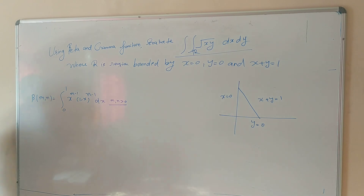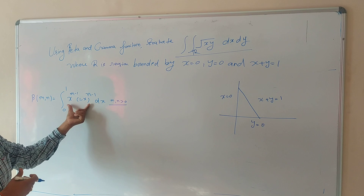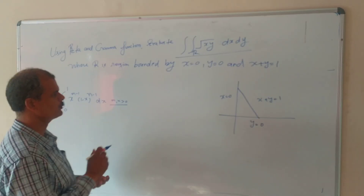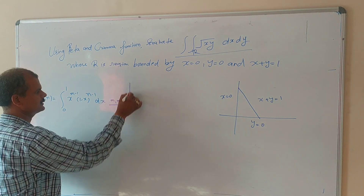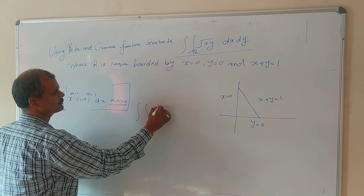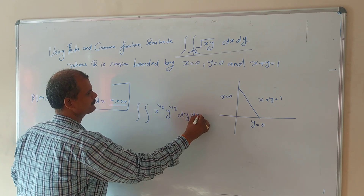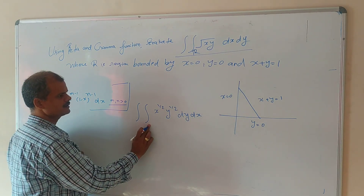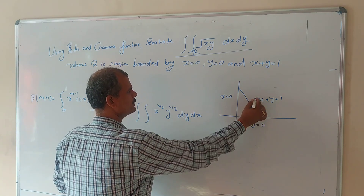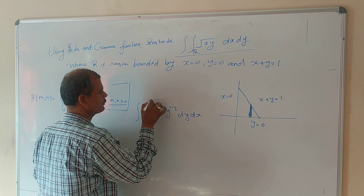So, if you want to change to beta and gamma function form, we need to get the form x(1−x). Over this region, y can be replaced by 1 minus x, so we get this form. We have the double integration of x^(1/2) times y^(1/2) dy dx. First we take the y limit: y varies from 0 to 1 minus x.